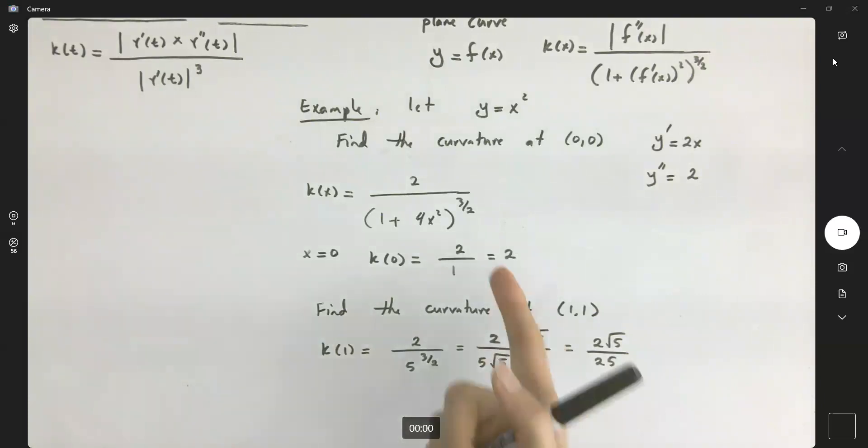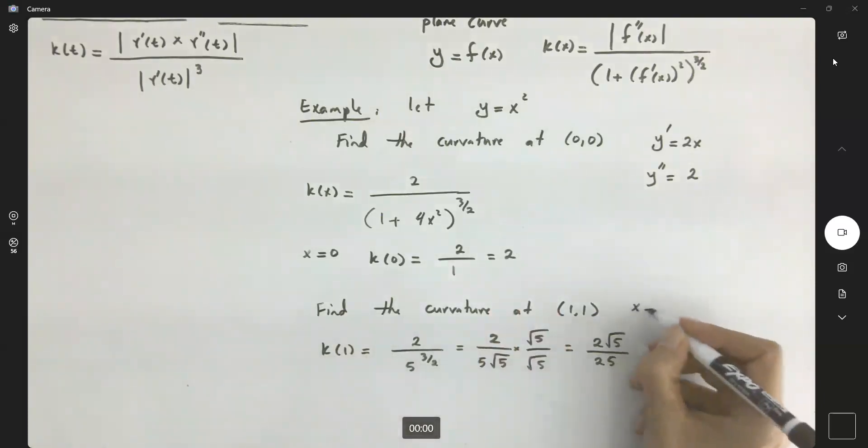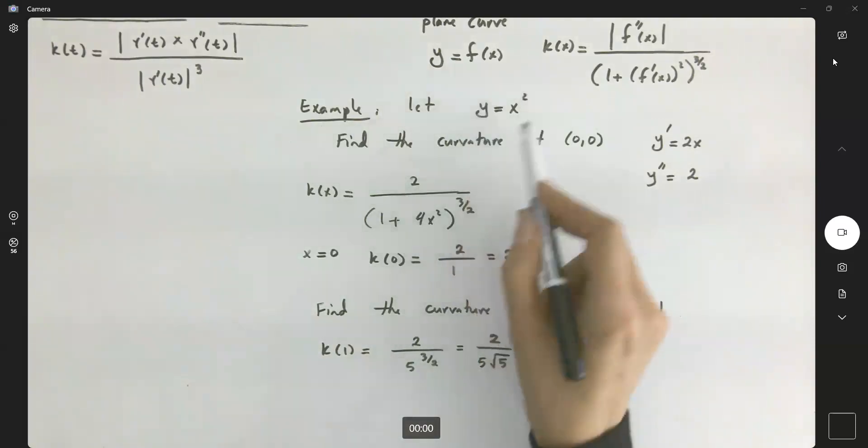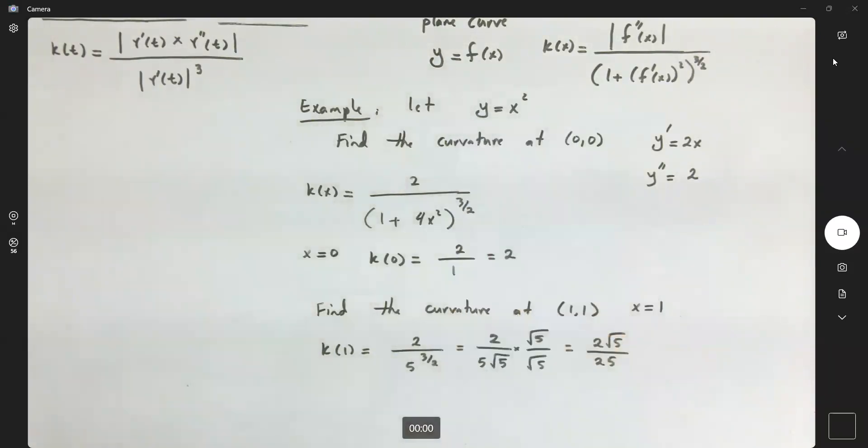So as you can see, you get different values for the curvature if you change your x values. We expect that if you graph this function at different points, the function is behaving differently. The curvature of the function is going to be different.